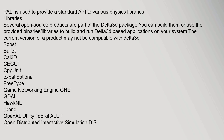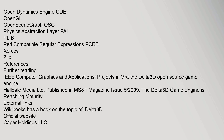The first version of SimCore was developed as part of the Deployable Virtual Training Environment (DVTE) project for USMC, which started in 2006. Although Allian is still the primary developer of SimCore, it is now used by a number of other companies and organizations across the modeling and simulation community. PAL is used to provide a standard API to various physics libraries. Several open-source products are part of the Delta 3D package including Boost, Bullet, Cal3D, CEGUI, Expat, FreeType, Game Networking Engine (GNE), OpenAL, Open Dynamics Engine (ODE), OpenSceneGraph (OSG), Physics Abstraction Layer (PAL), PLIB, PCRE, Xerces, and Zlib.